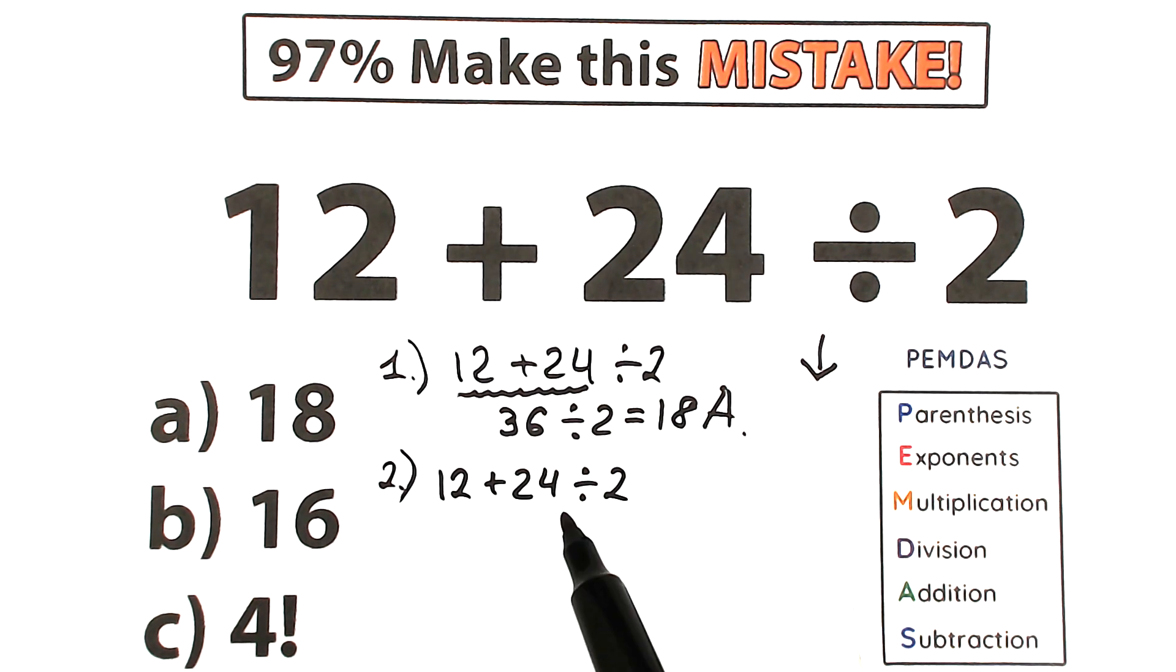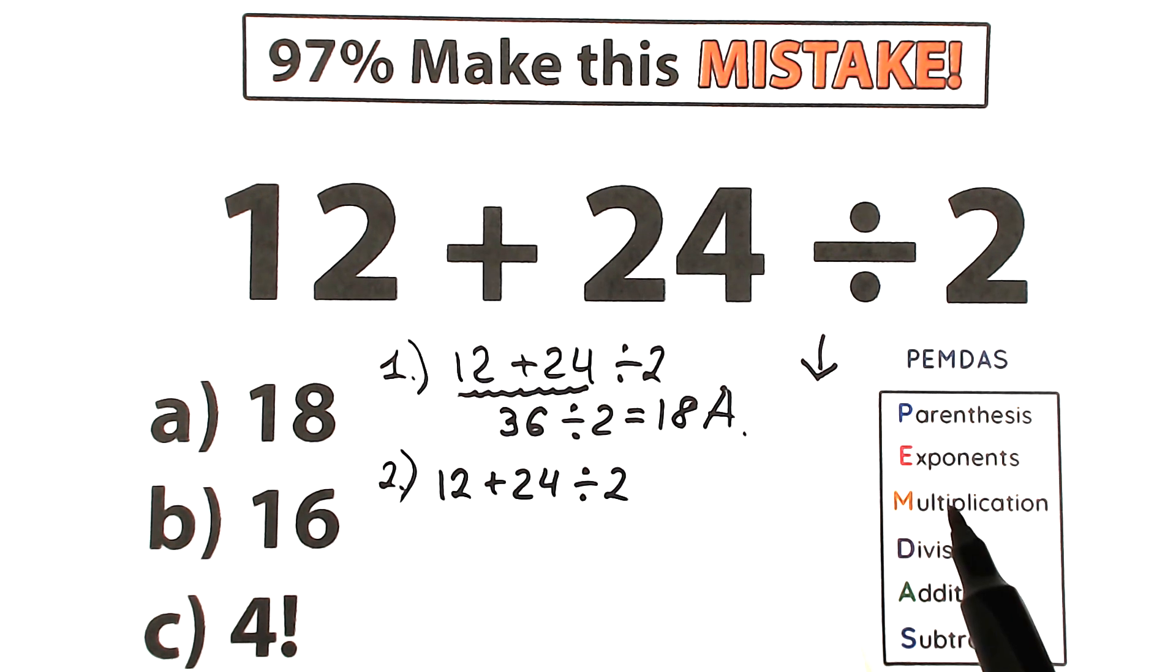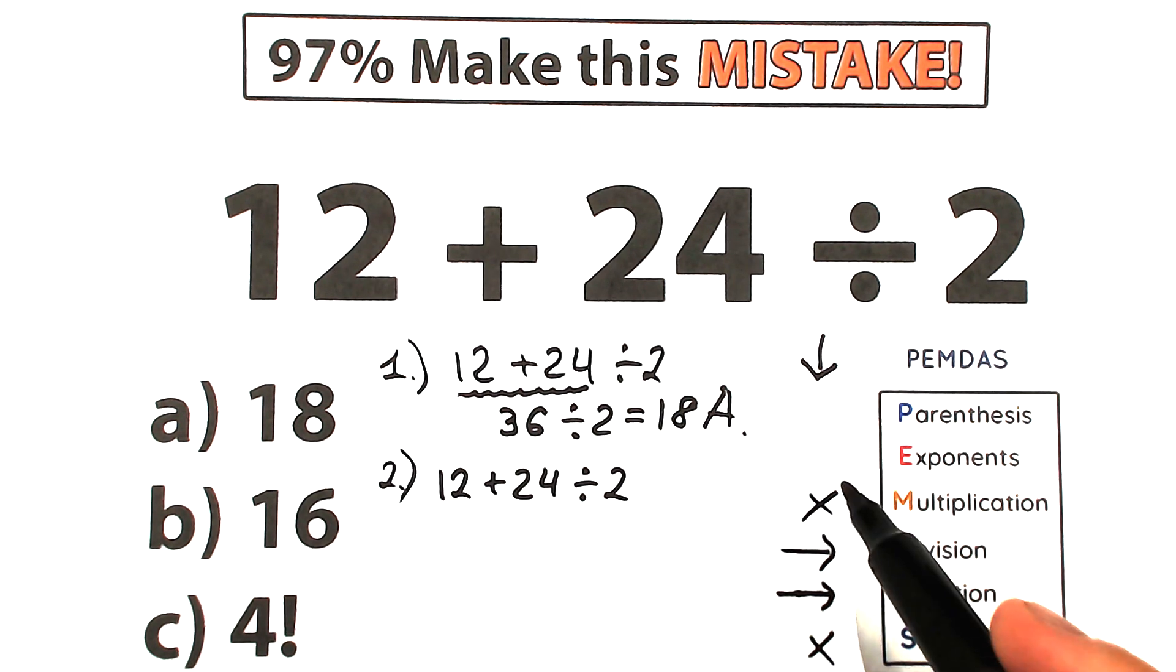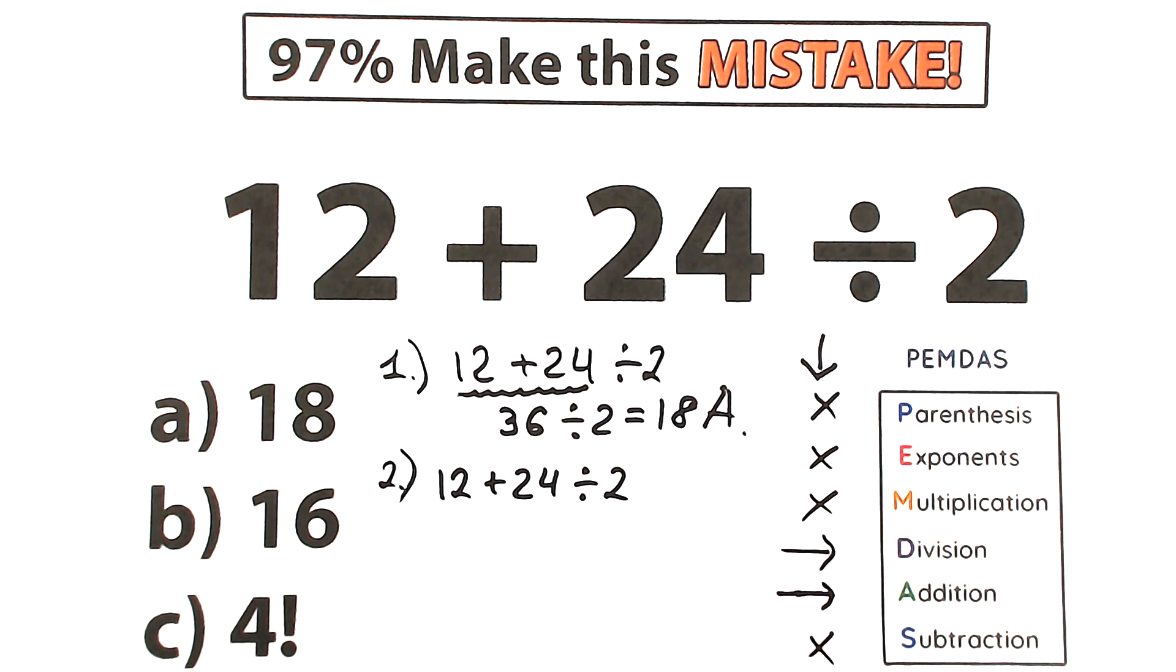So we have addition, we have division. Let's look at it. Addition, division, where do we have? We have division right here, and we have addition right here. So obviously we don't have subtraction, we don't have multiplication, we don't have exponent, we don't have parenthesis. So we have only division and addition.